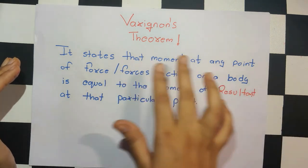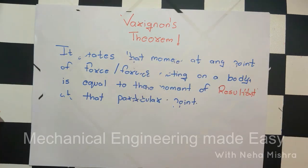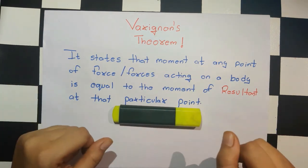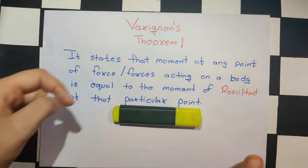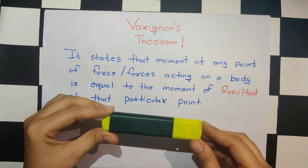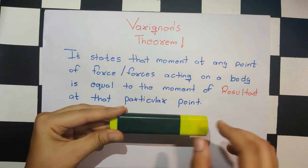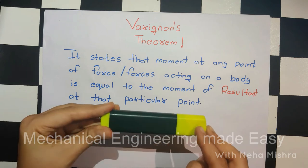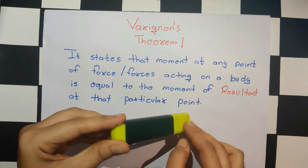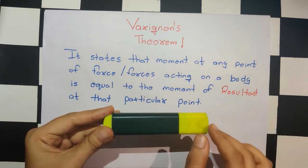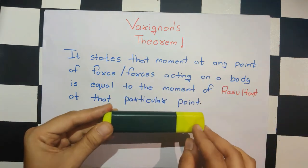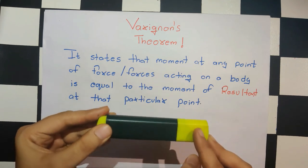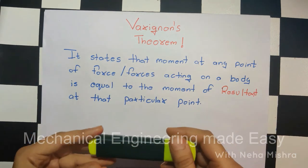Let's understand the physical meaning through an example. Suppose we have an object where different forces act from different directions — some vertical, some horizontal, some inclined. As an effect of all these forces, the object moves in a certain way. Now we remove all those forces and apply just the resultant force at some particular distance, such that it gives the exact same effect — not more, not less.